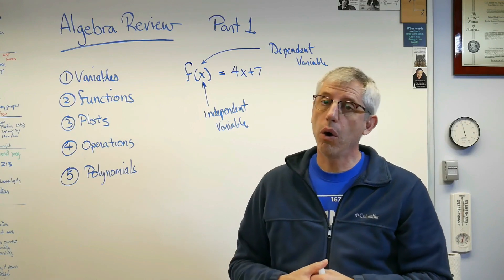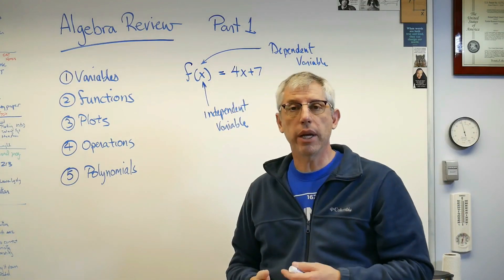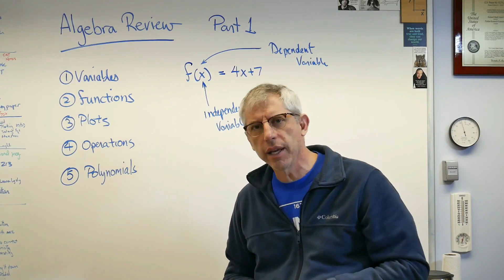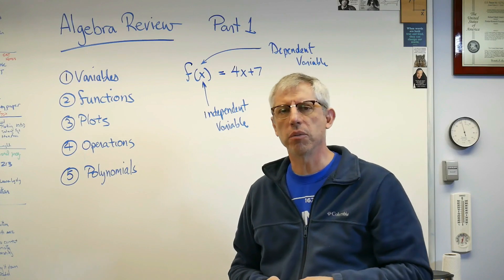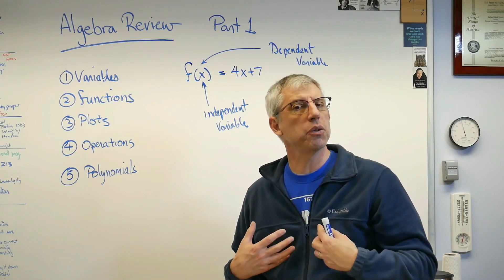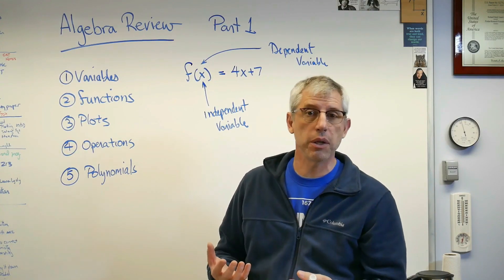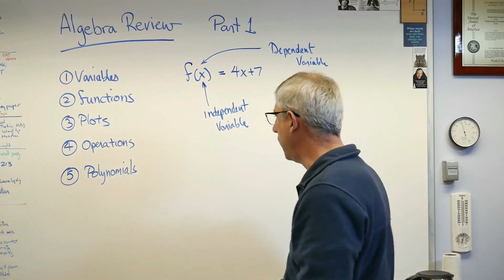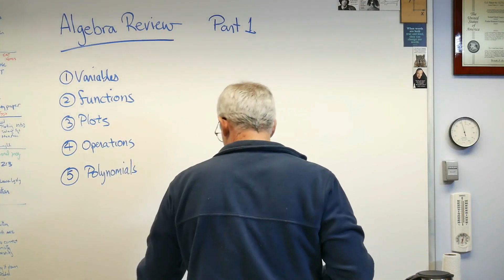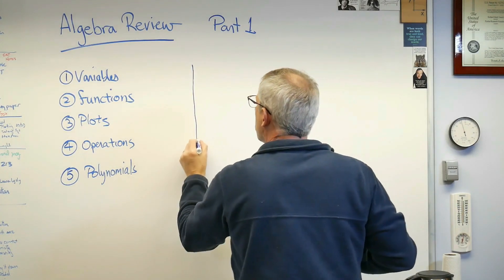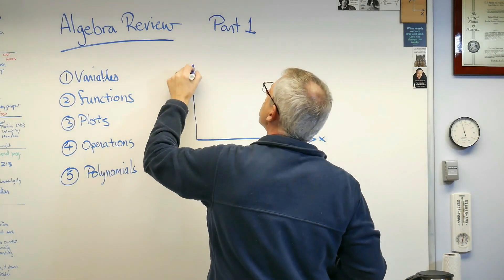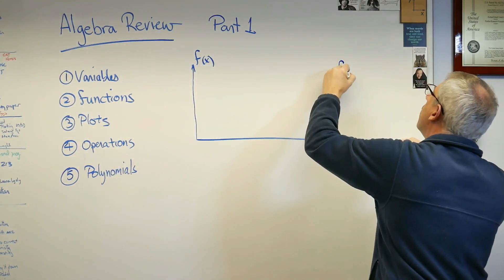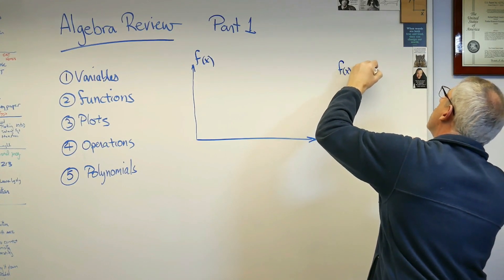We can also draw pictures of our numbers. Our brains evolved to be very visual and very good at pattern recognition — to the point where we see patterns even where there aren't any. Anytime we can turn a bunch of numbers and symbols into a picture, that's usually a good thing. That's where plots come in. I can draw two axes, and it's important that these axes be perpendicular to each other — that angle has to be 90 degrees.